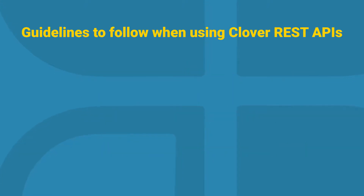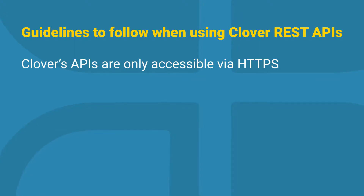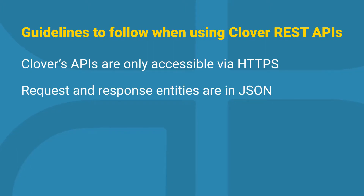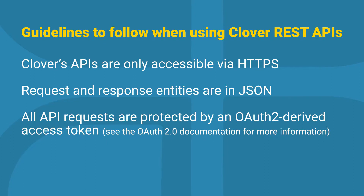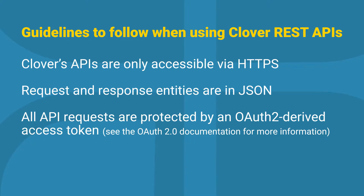Here are some basic guidelines to follow when you're using the REST APIs. Clover's APIs are only accessible via HTTPS. Request and response entities are in JSON. All API requests are protected by OAuth2-derived access tokens. See the OAuth2 documentation or the video for more information — link is in the description below.